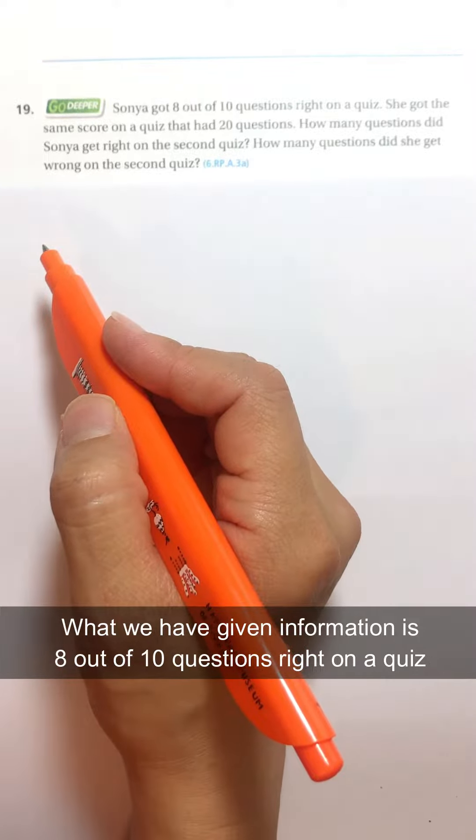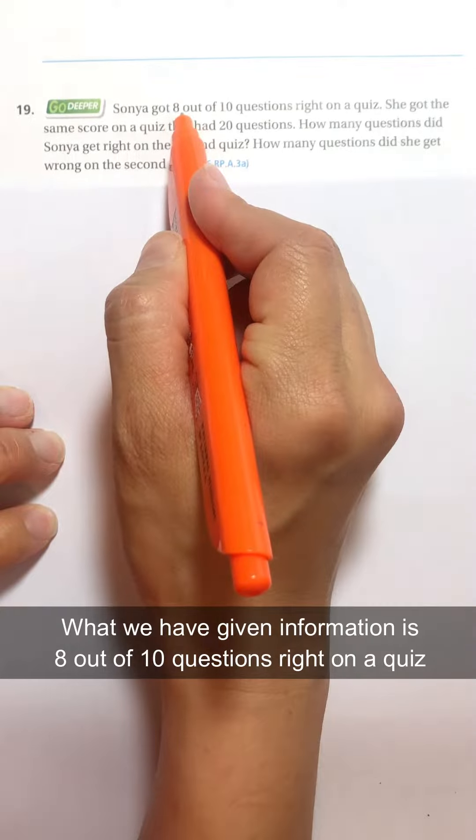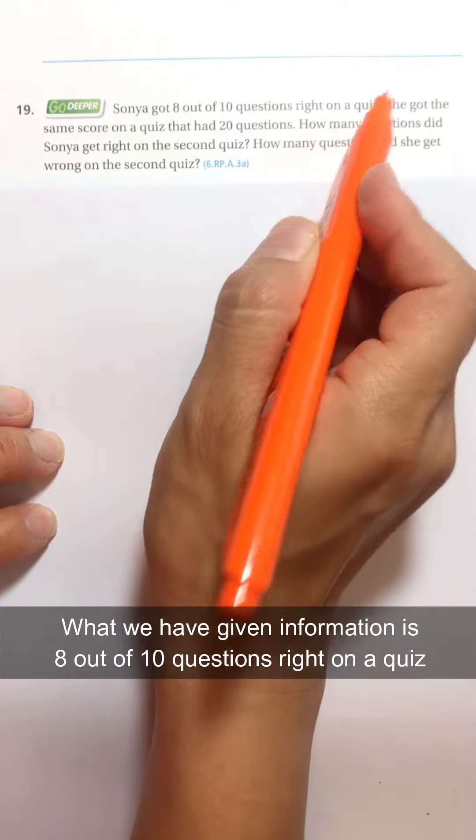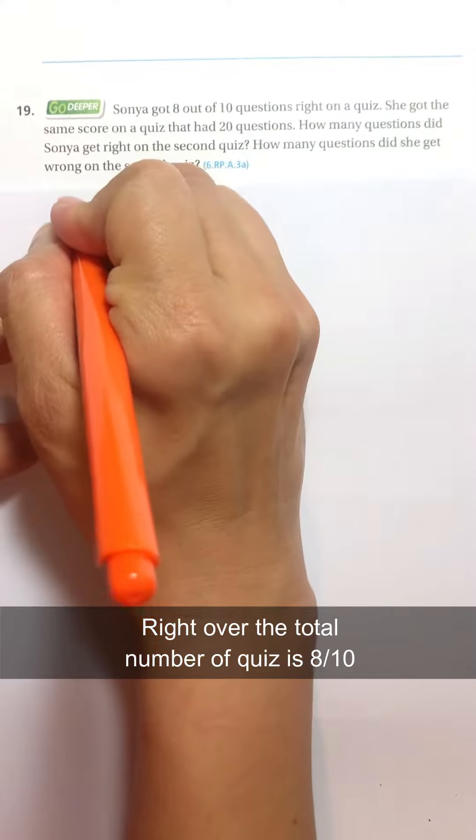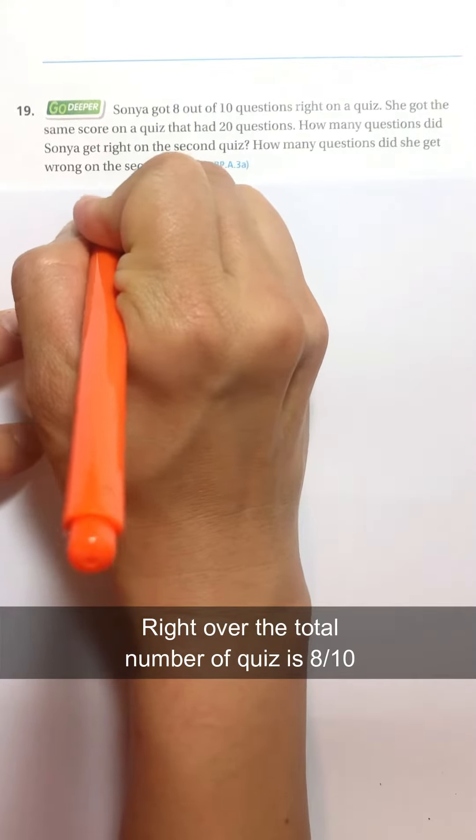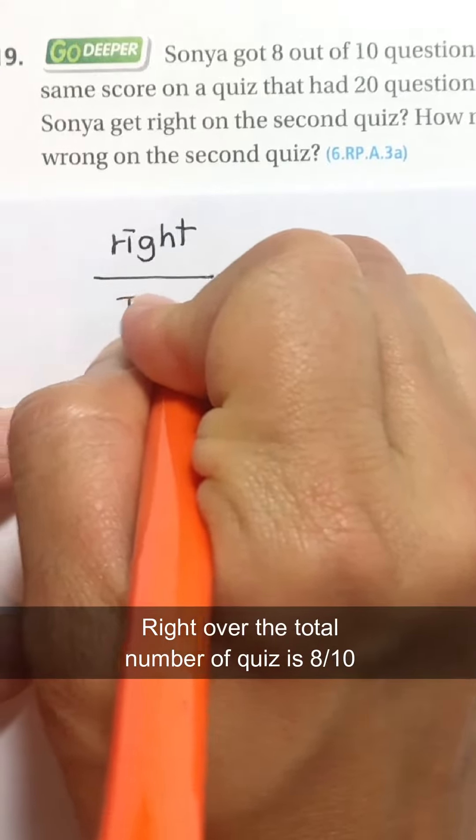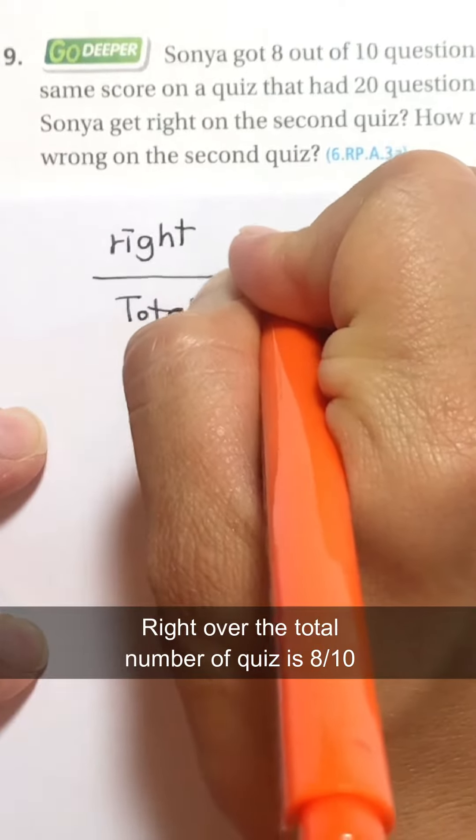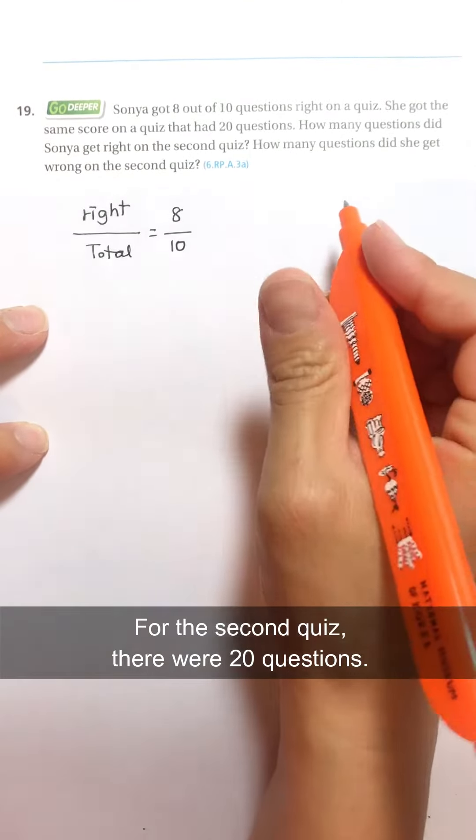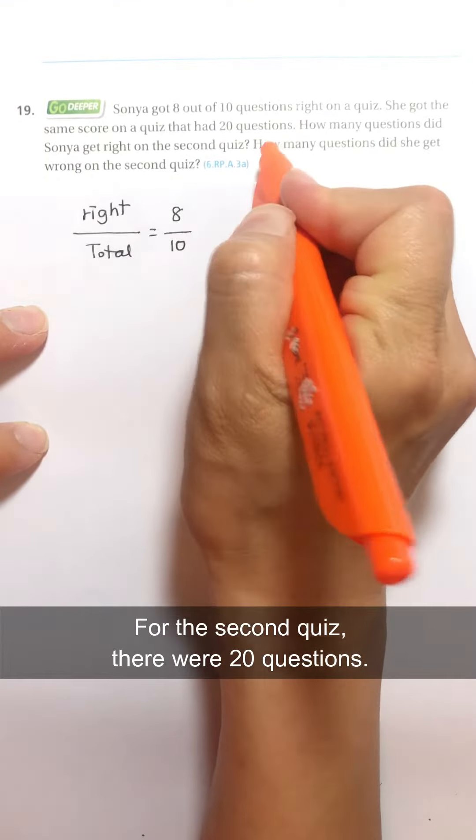So the given information is 8 out of 10 questions right on a quiz. So write over the total number of quiz is 8 over 10. And for the second quiz, there was 20 questions.